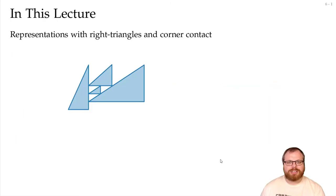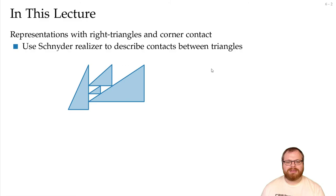In this lecture, we have a look at two different types of contact representations. First, for right triangles, where we have corner contacts, so all the contacts have one corner and one edge, or two corners. We use a Schnyder realizer to describe those contacts, and then we use a canonical order to calculate the drawing.